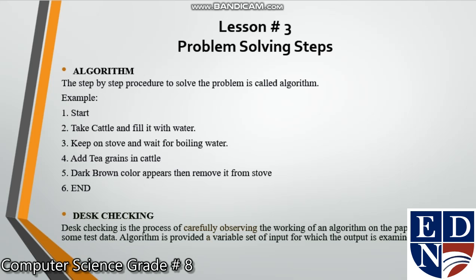We can understand this with an example. With an algorithm, we mostly work on paper first, document it properly, and then implement it. We have a small algorithm for making tea, which is the best step-by-step procedure. We start, then we have a kettle and fill it with water.